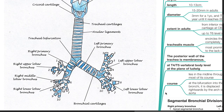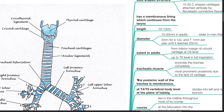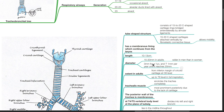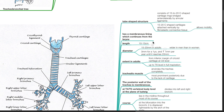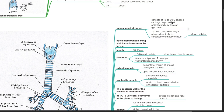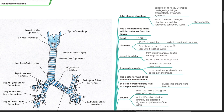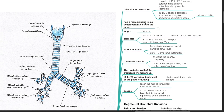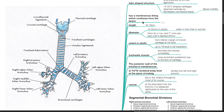Structure. The trachea has a tube-shaped structure consisting of 15 to 20 C-shaped cartilage rings bridged anterolaterally by annular ligaments. These cartilages are attached vertically by fibroelastic connective tissue and allow mobility. It has a membranous lining which continues from the larynx. Its length is 10 to 13 cm and diameter is 15 to 20 mm in adults, wider in men than women.